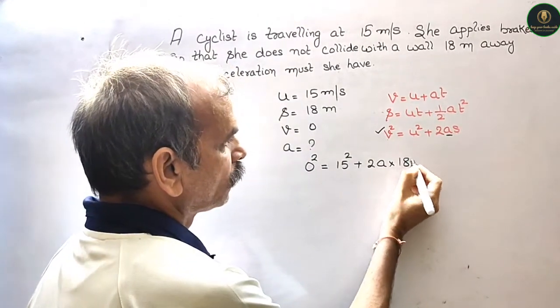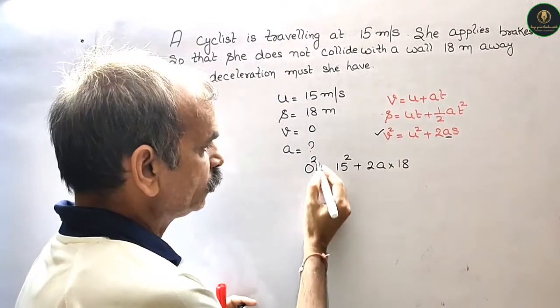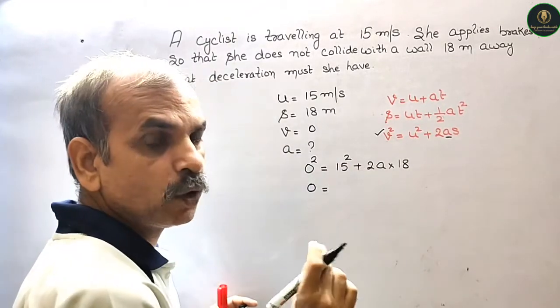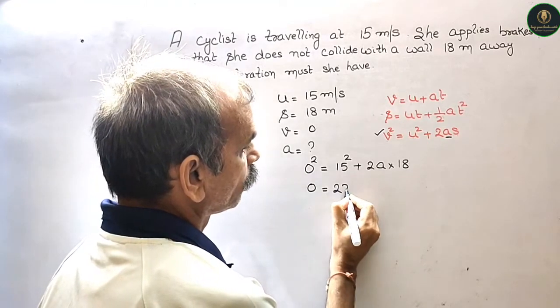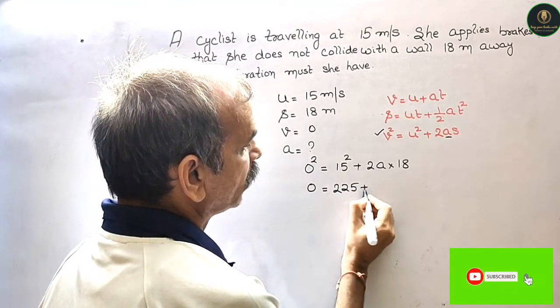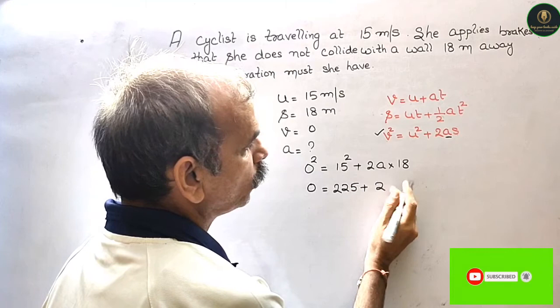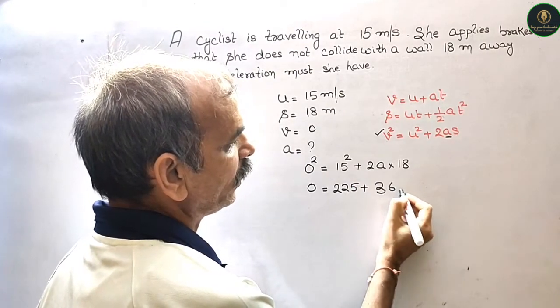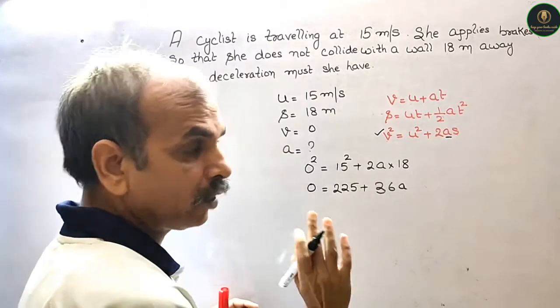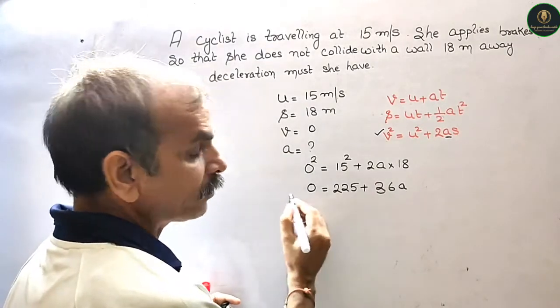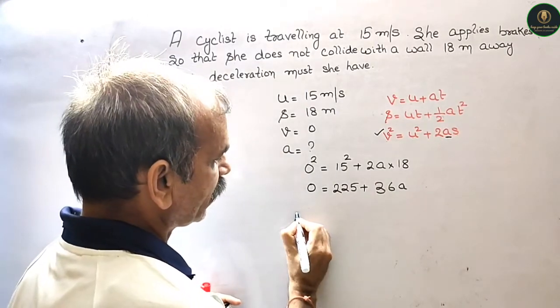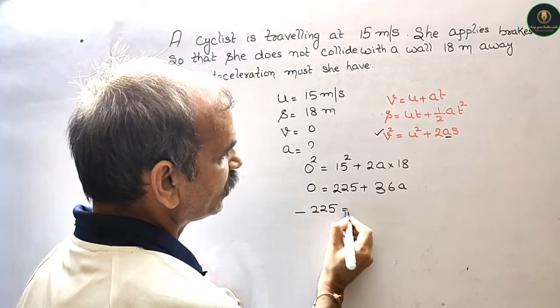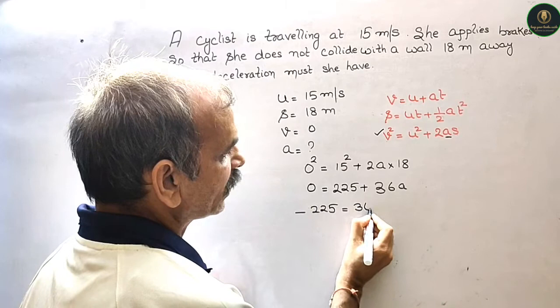So now this is zero square is zero. Now 15 square is 225 plus 2 into 18 is 36. 36A. So now this will be minus 225 that is equal to 36A.